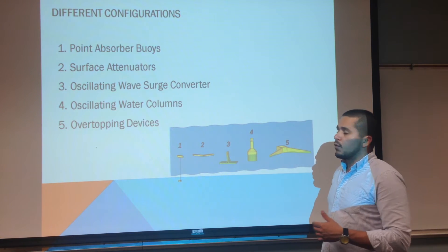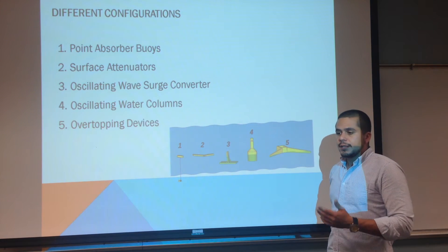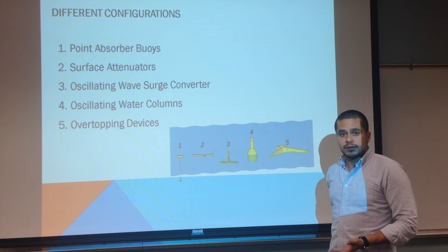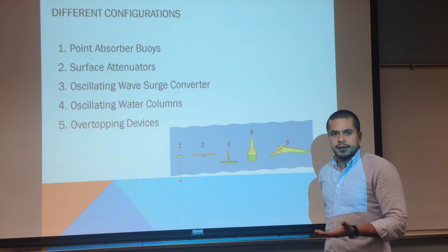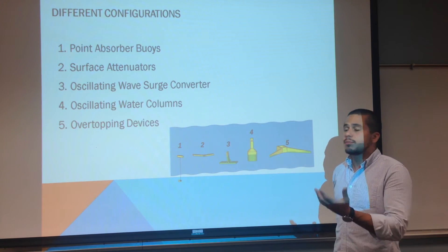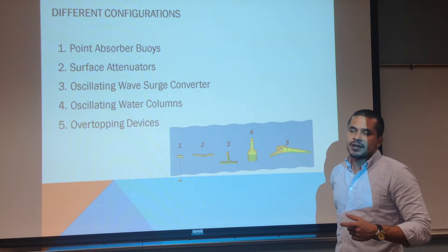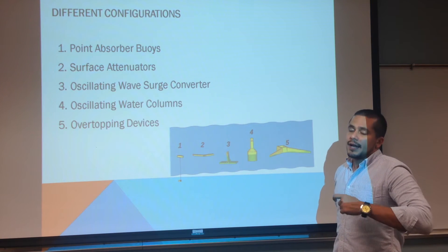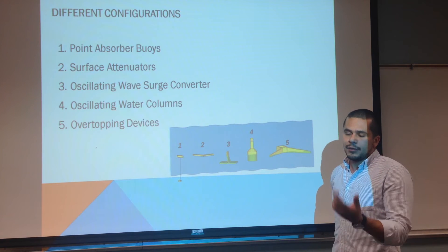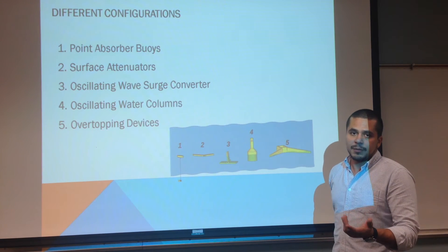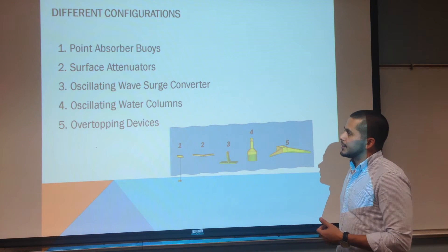Oscillating water columns work on a very different concept. They use the movement of the change in the swell to activate a membrane, which increases the air pressure inside a container. That air then goes through a tube and through a turbine that transforms this air flow into electrical energy.